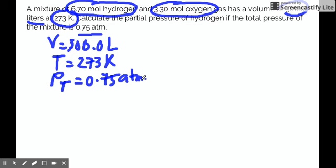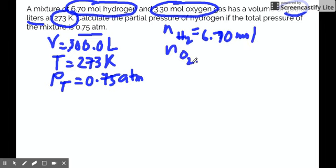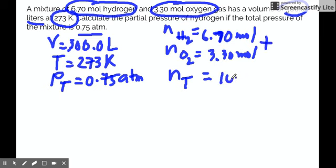And then for N, you put that on the next column. N of H2 is given, which is 6.70 mole, and then N of O2 is 3.30 mole. And then from there, because you have two components, of course you can readily calculate for the N total, which is 6.70 plus 3.30 mole, you get 10.0 mole.